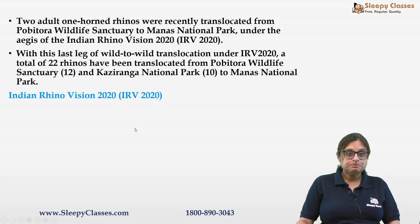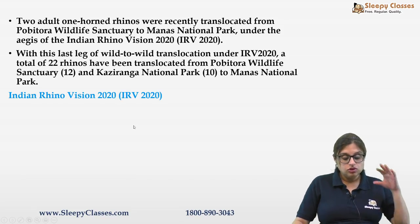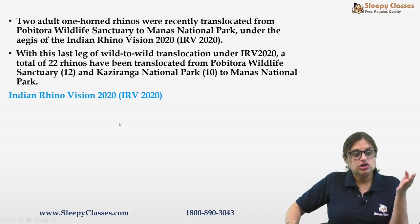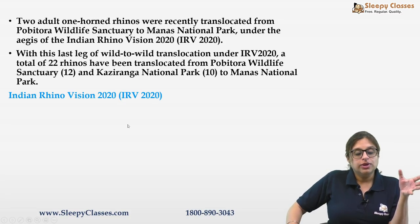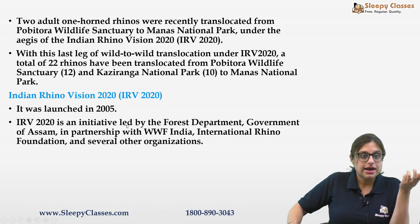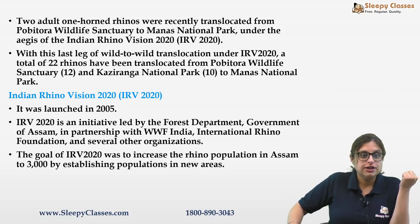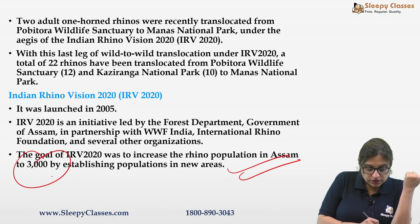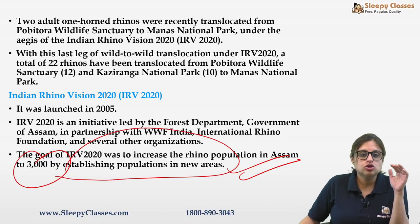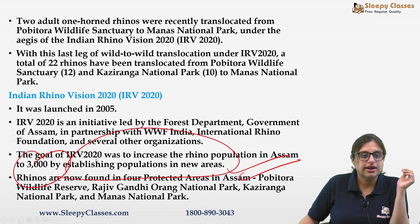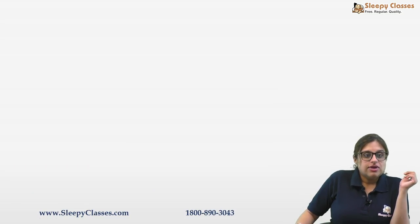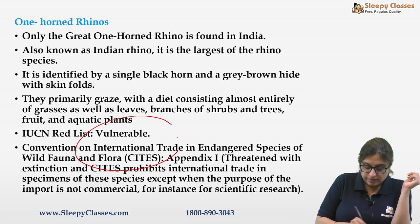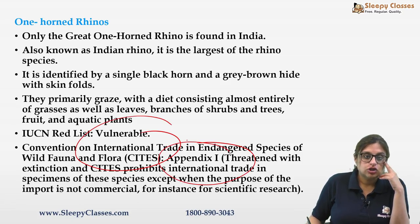Rhinos from Kaziranga and Pobitora have been moved to Manas National Park to increase their numbers, under the Indian Rhino Vision 2005. The goal is to increase the rhino population in Assam to 3000 by establishing populations in new areas — currently around 2400–2600. IUCN status: vulnerable. CITES Appendix 1. Schedule 1 of Wildlife Protection Act. India also has the New Delhi Declaration on Asian Rhinos of 2019, signed by five Asian rhino range nations.